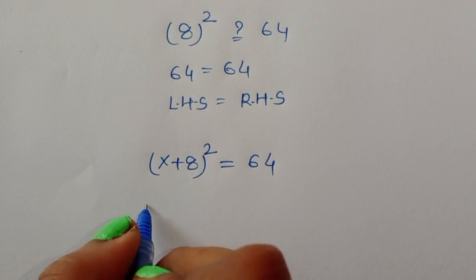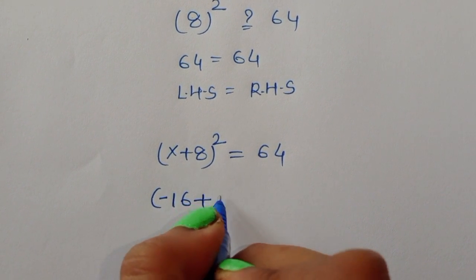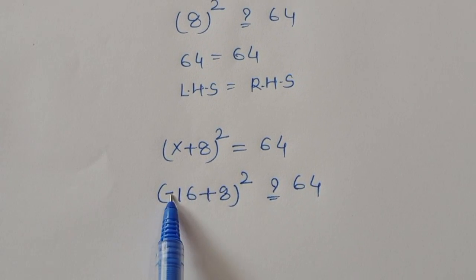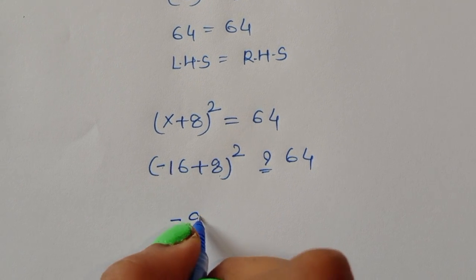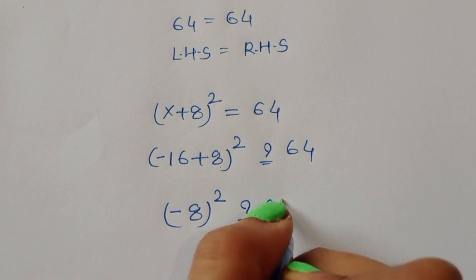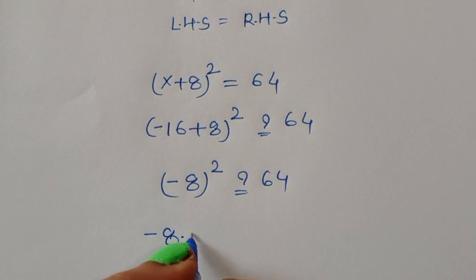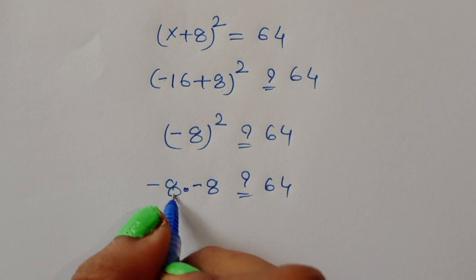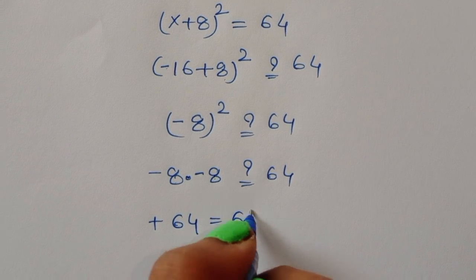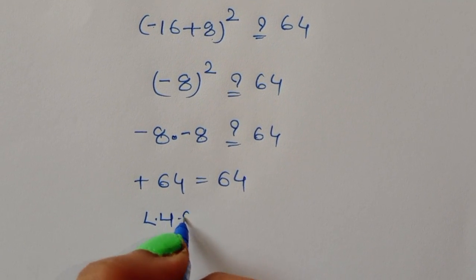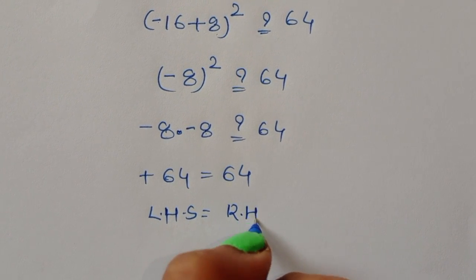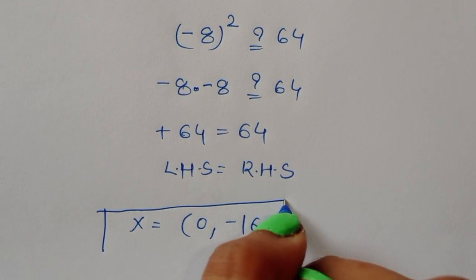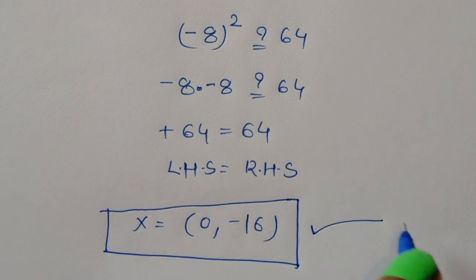Substituting x equal to minus 16: minus 16 plus 8 whole square equals minus 8 whole square, which is minus 8 times minus 8 equals 64. So LHS is equal to RHS. Therefore, both values x equal to 0 and x equal to minus 16 are correct solutions for this equation. Thank you.